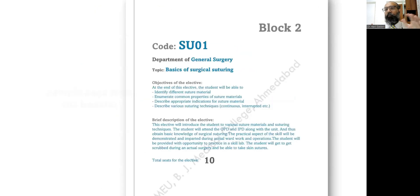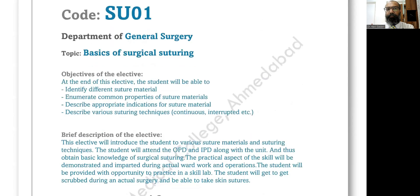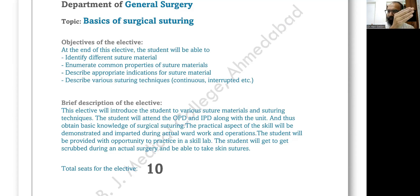Similarly, for a block two elective, the code is SU01, offered in the Department of General Surgery. It is about basics of surgical suturing — the objectives and brief description are provided. We are offering 10 seats for this particular elective. Just as there were various medical colleges with fixed seats and you filled out preferences, you will be able to see what each elective offers and the total number of seats available.